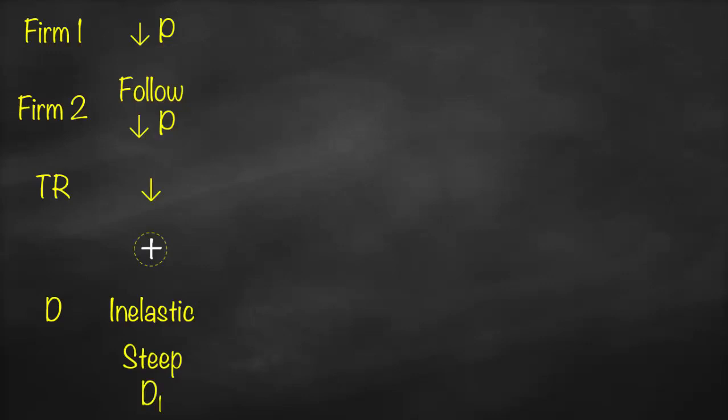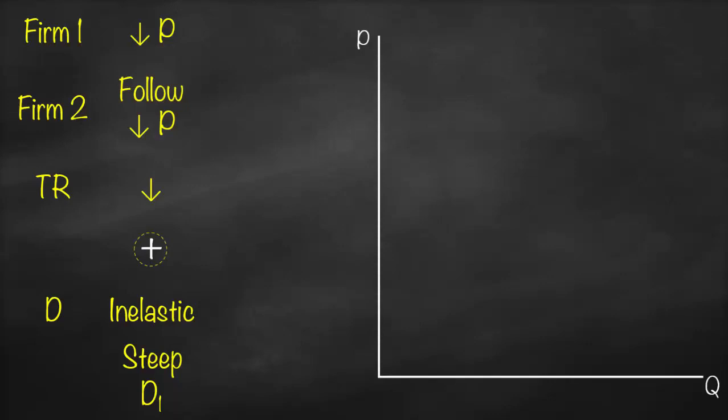We will label this as D1. The x-axis is quantity, the y-axis is price, and we will draw a steeper demand curve and call it D1.